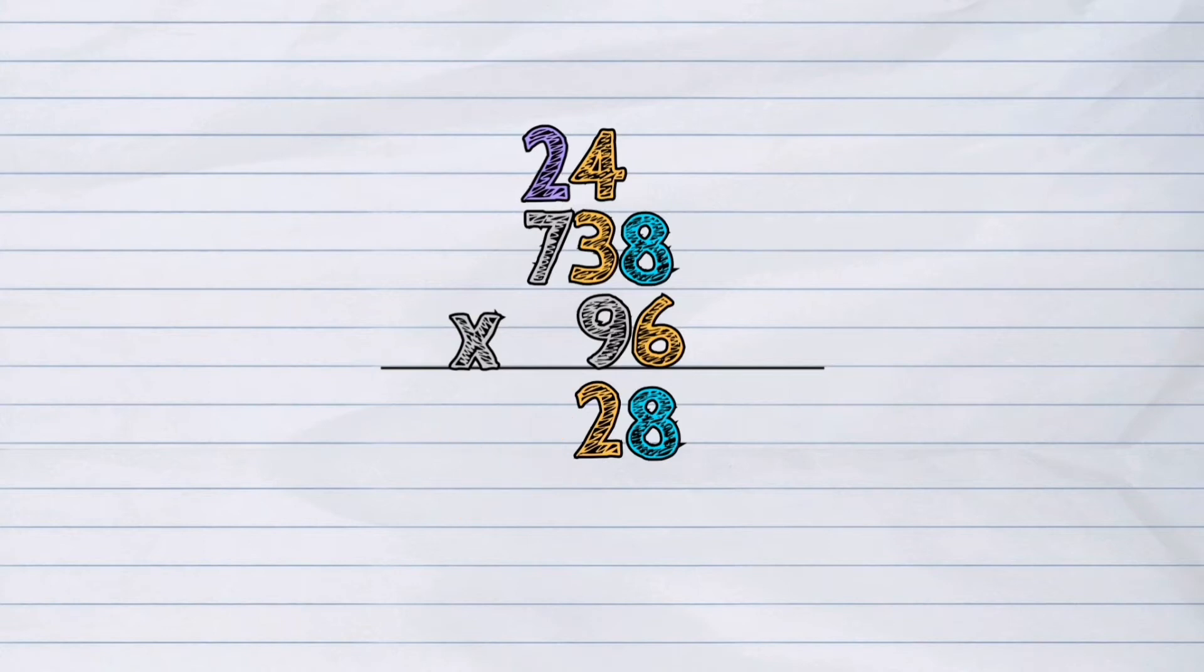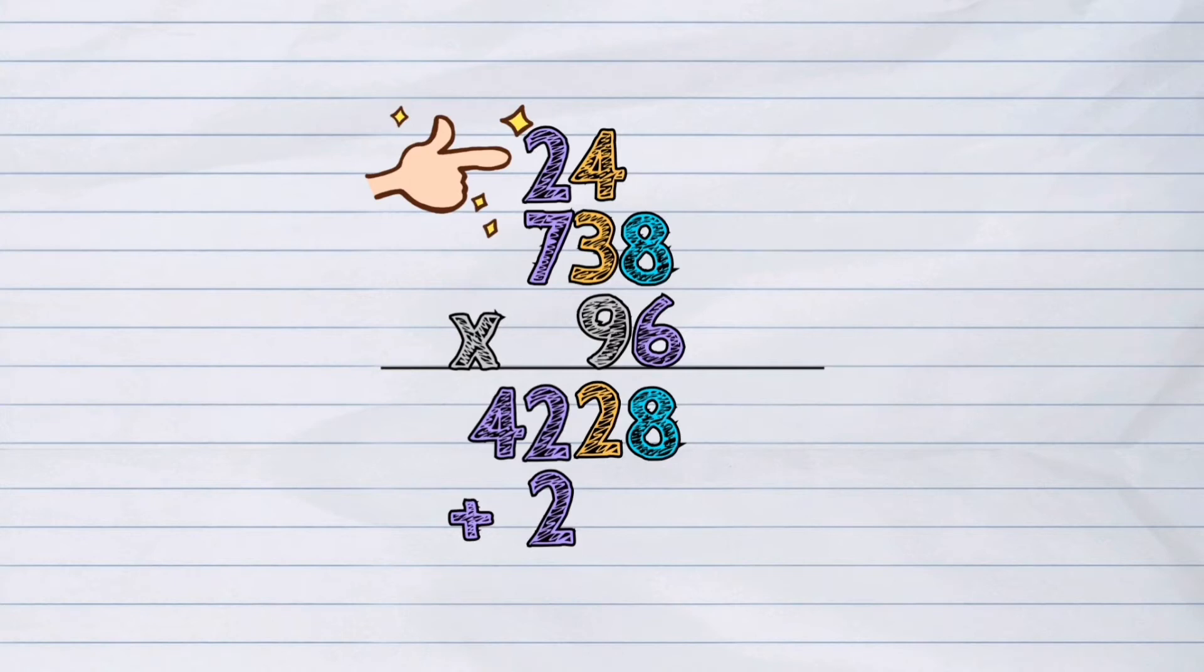Next, the ones place of the multiplier is multiplied by the hundreds place of the top number. 6 times 7 is equal to 42. The 2 that was previously carried to the hundreds place is added, which gives the answer of 44. Write this answer below the line.